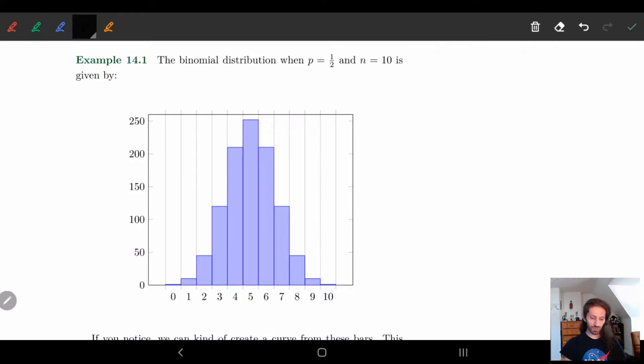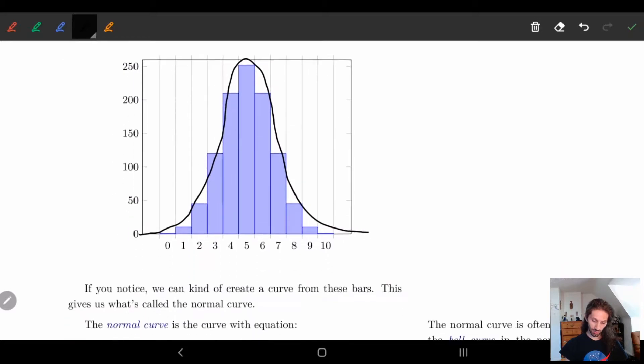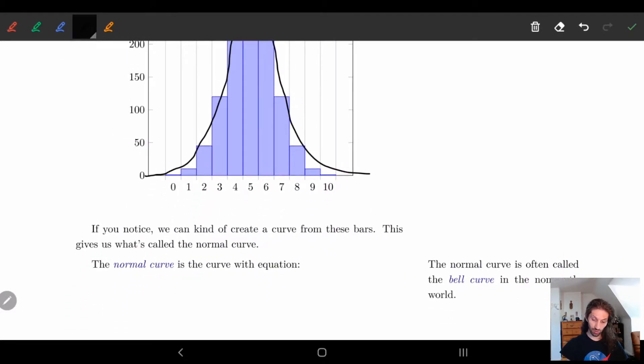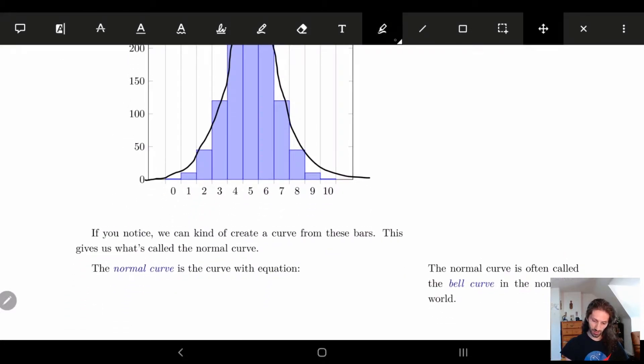And what we want to do is we want to take this and we want to make it into a nice curve. And it turns out we actually kind of can. So this nice curve is actually called the normal curve.